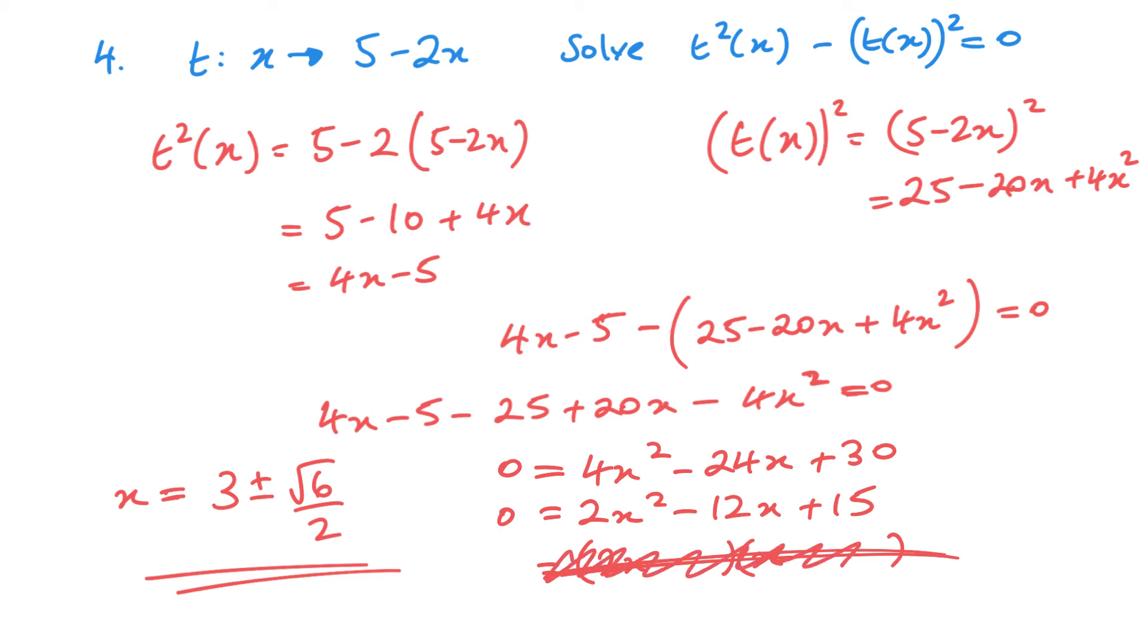And then I divide by 2 here just to make my quadratic a little bit easier to deal with. Let's try and factorize first. 2x and x. Now it doesn't look like this one factorizes. So I need to use the formula there. I'm actually just going to work this out in my calculator quickly just to save a little bit of time. So we get 3 plus or minus root 6 over 2 as my two solutions there.